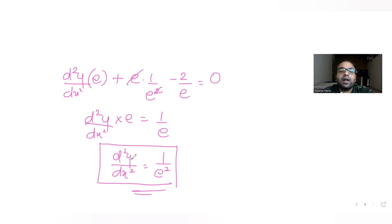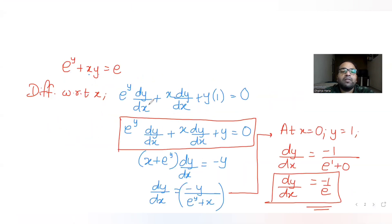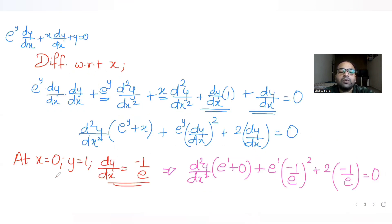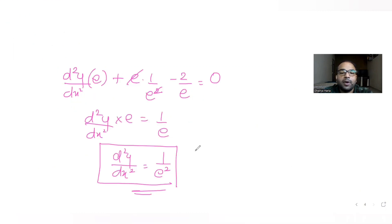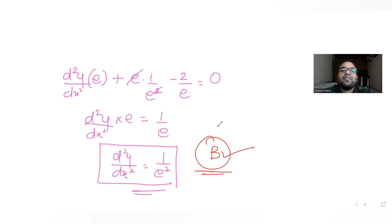So the answer is 1/e². To summarize: find y at x = 0, differentiate the expression to get dy/dx, then differentiate again to get d²y/dx². Substituting x = 0, y = 1, and dy/dx = −1/e gives d²y/dx² = 1/e², which matches the correct option. I hope you've understood how to solve this type of differentiation question. Like, share, and subscribe. Thank you!